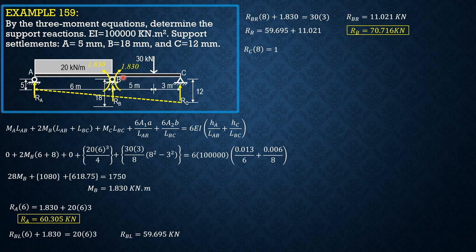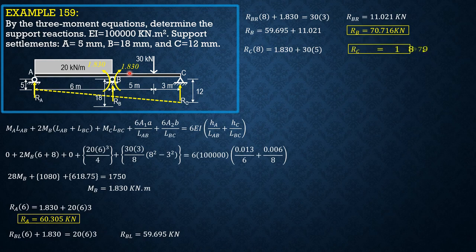So considering BC, summation of moments about B equals 0, counterclockwise positive: RC × 8 = 1.83 + 30 × 5, so RC = 18.979 kN. So I leave that to you to check summation of vertical forces. It should be more or less zero. So that's it for this problem.